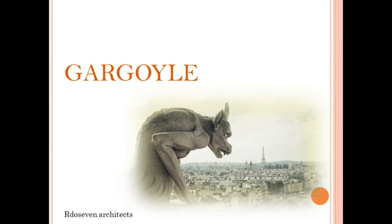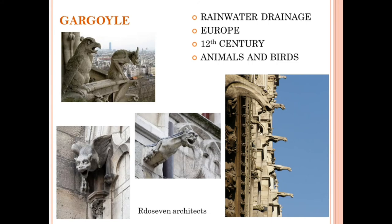Gargoyles. In Gothic architecture, gargoyles are also an important feature. They are used for both decorative and practical purposes. Basically, they convey rainwater from the roof and away from the sides of the building. Gargoyles appeared in Europe in the 12th century. Many early gargoyles depict versions of animals and birds, such as dragons in France.